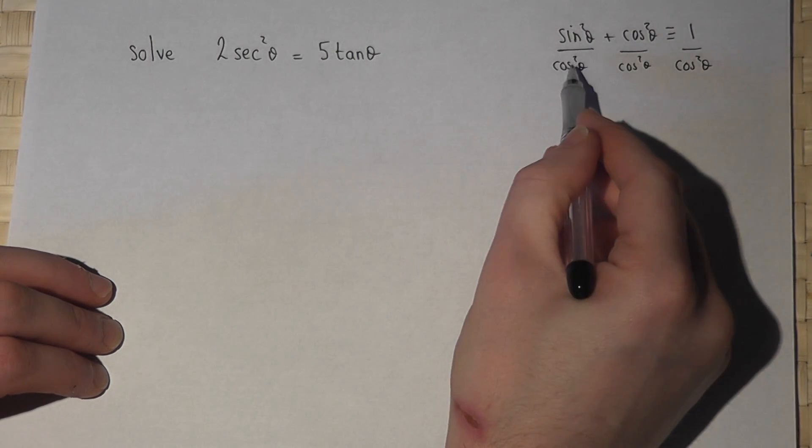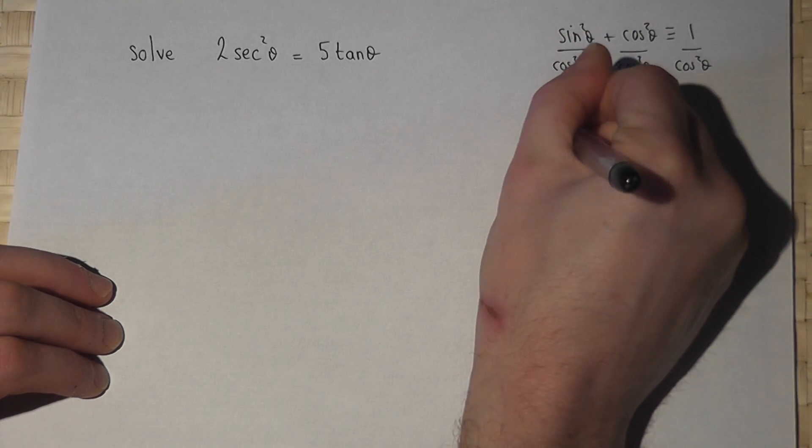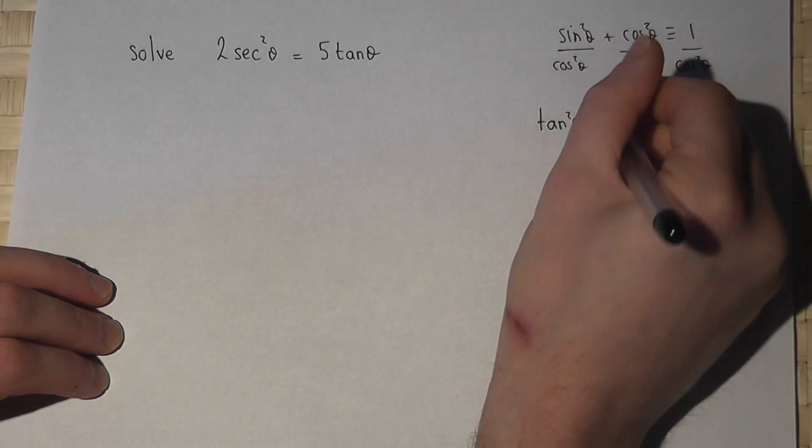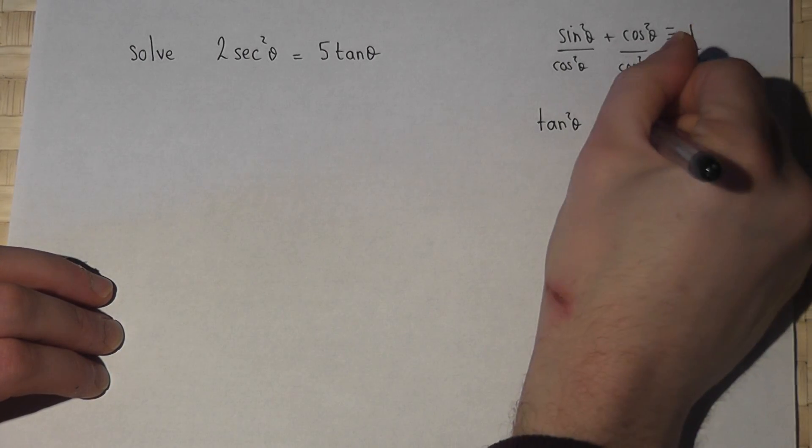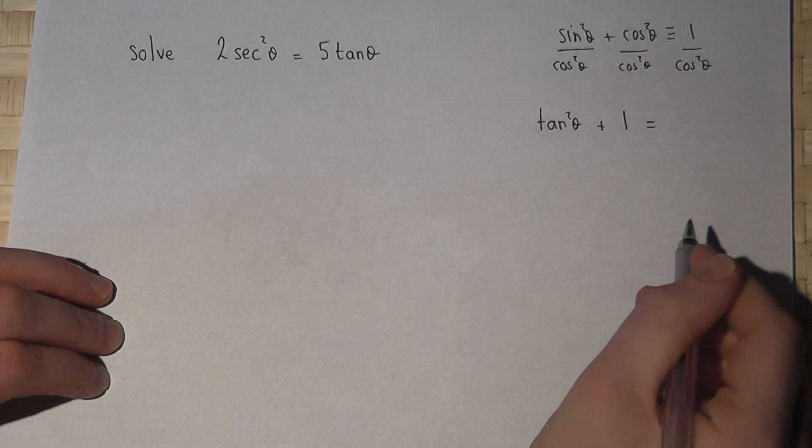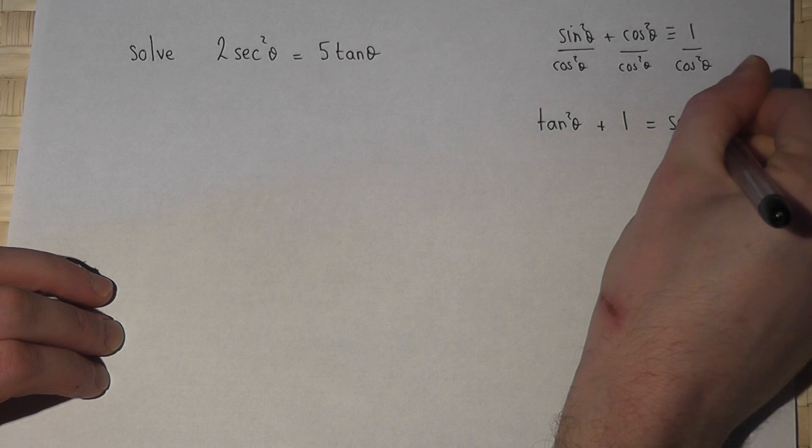Sine over cos is tan, so sine squared over cos squared is tan squared theta. Cos squared over cos squared is 1. 1 over cos is sec, so 1 over cos squared is sec squared theta.